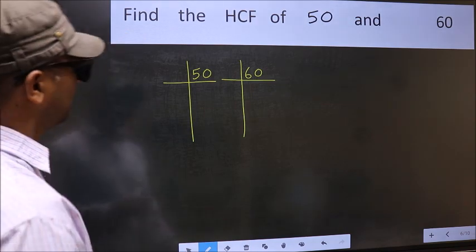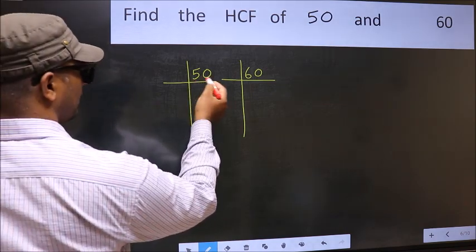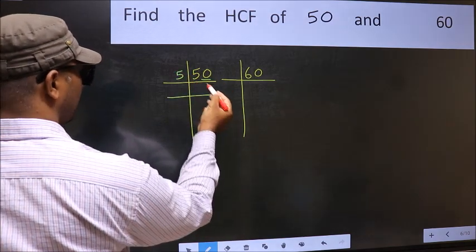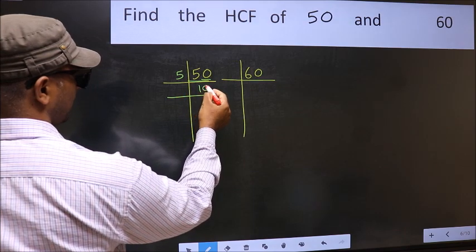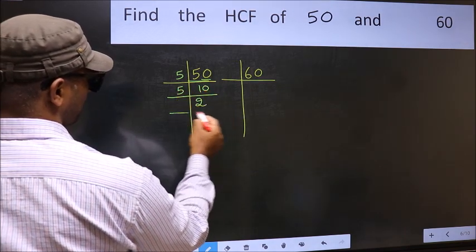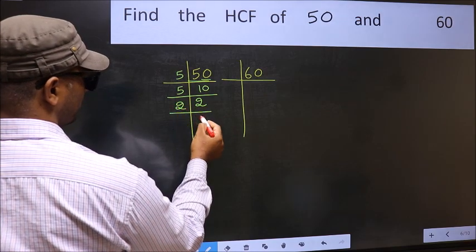Next, in this number, the last digit is 0, so take 5. When do we get 50 in the 5 table? 5×10 is 50. Now 10 is 5×2 is 10. 2 is a prime number, so 2×1 is 2.